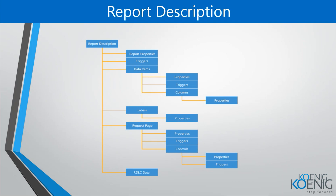This is a brief overview of report description. Later when we go to Visual Studio Code and start coding, it will be more clear. For now, let's understand the report as an object. A report has report properties — just like every object in Business Central has its own properties that describe it. Reports also have triggers, which are used to perform some action after an event occurs. And we have data items.